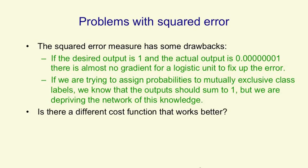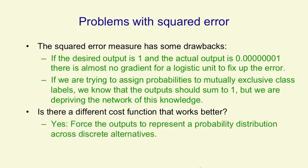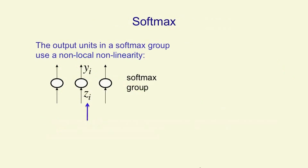So the question is: is there a different cost function that will work better? Is there a way of telling it that these are mutually exclusive, and then using an appropriate cost function? The answer, of course, is that there is. What we need to do is force the outputs of the neural net to represent a probability distribution across discrete alternatives, if that's what we plan to use them for. The way we do this is by using something called a softmax.